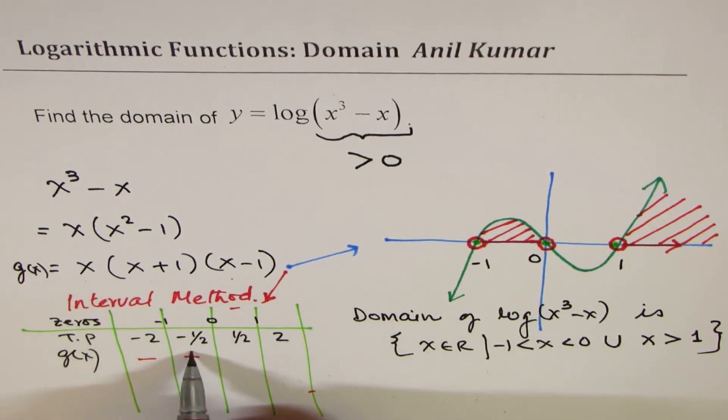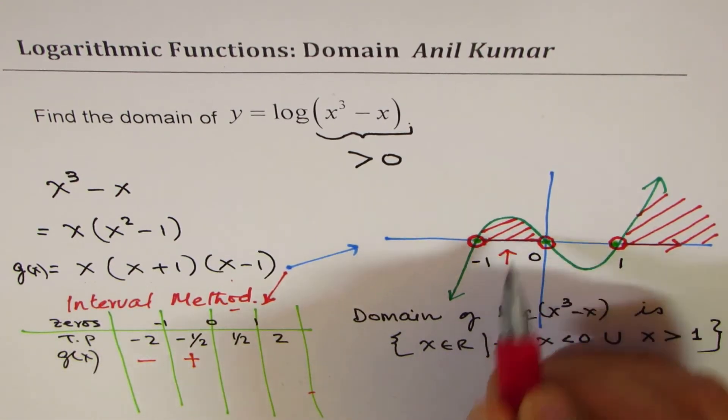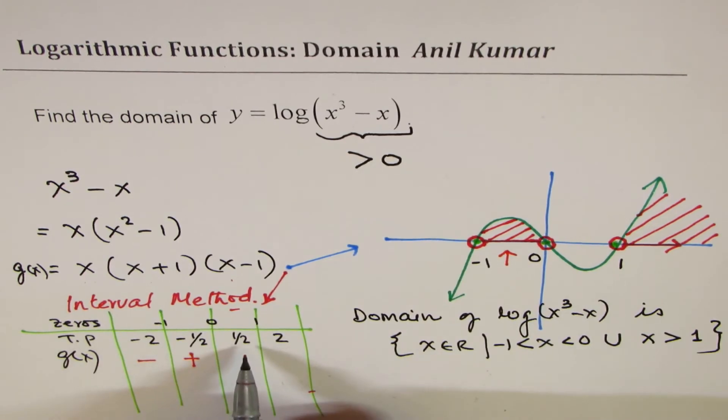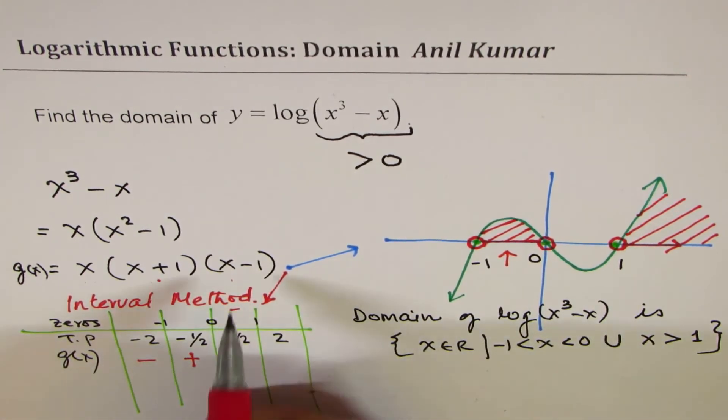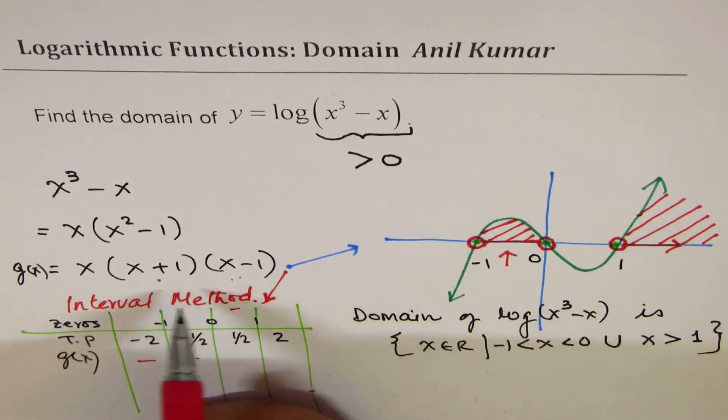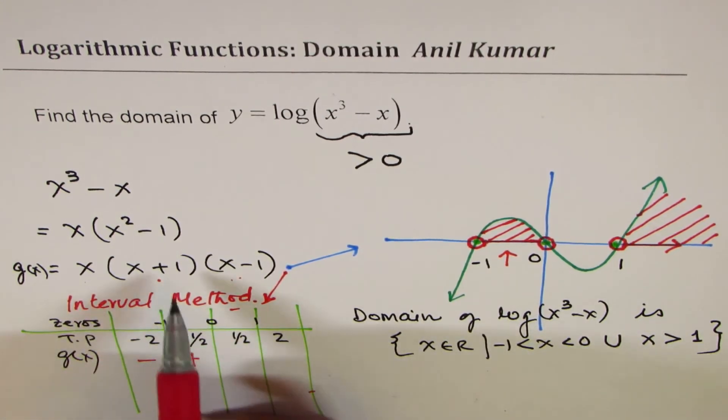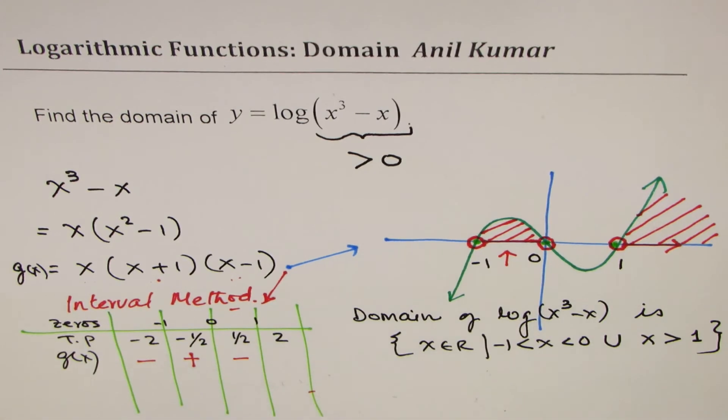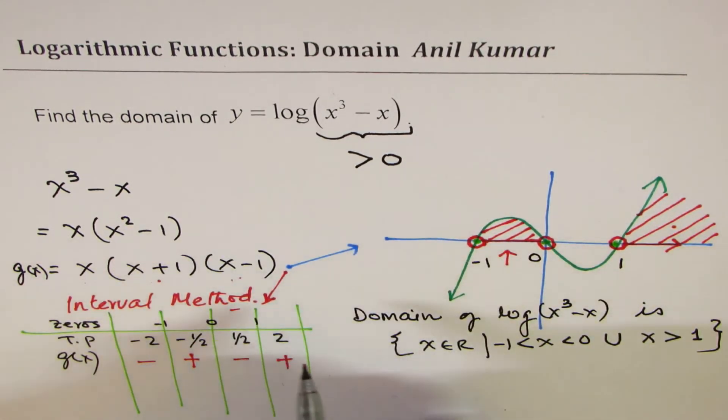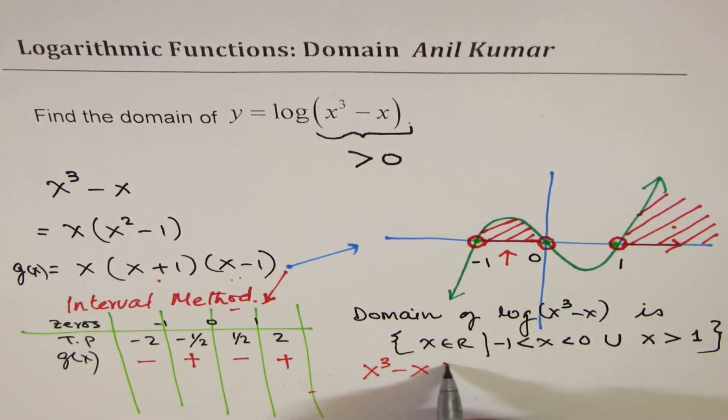which we see in this portion. Then 1/2 is going to give me negative only for x - 1. These 2 will be positive, and therefore this is negative. And if x is greater than 1, then we are going to get positive as shown here. We are looking for a value where x³ - x is greater than 0.